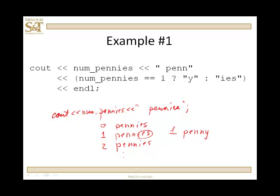I solved the problem using the ternary operator, right in the stream. I had cout, num_pennies, then 'pen' and the ternary: is num_pennies equal to one? If so, return the string 'y'; otherwise, the string 'ies'. So if num_pennies was one, it output 'penny'; otherwise it output 'pennies' for zero, two, three, four, etc. I thought that was a very elegant solution — a lot less cumbersome than an if-else.